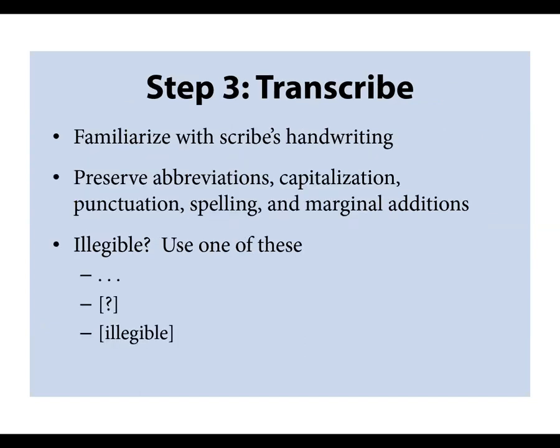Sometimes you have to transcribe the entire document to really understand a particular scribe's style. When transcribing, copy it word for word, letter for letter — don't modernize the spellings, preserving the abbreviations, capitalization, punctuation, spelling, and any marginal notations. If something is really illegible, mark the place with dots or question marks in square brackets, or the word 'illegible' in square brackets. This step helps you learn a specific scribe's style.